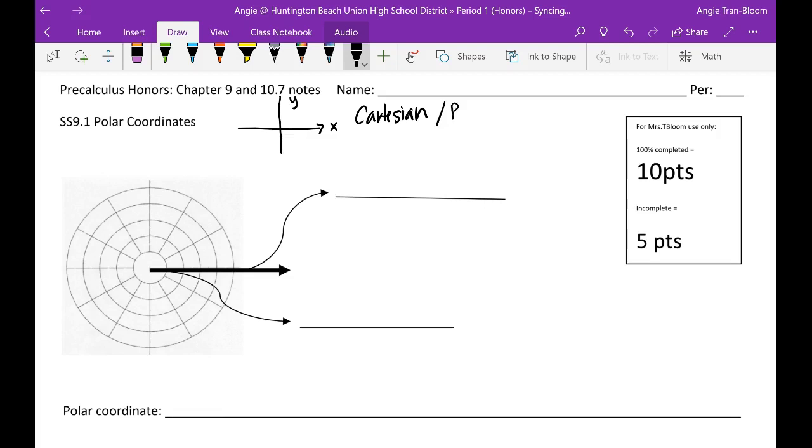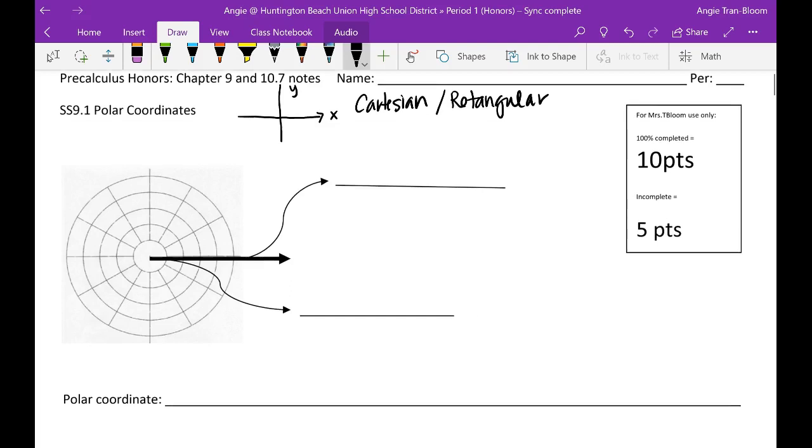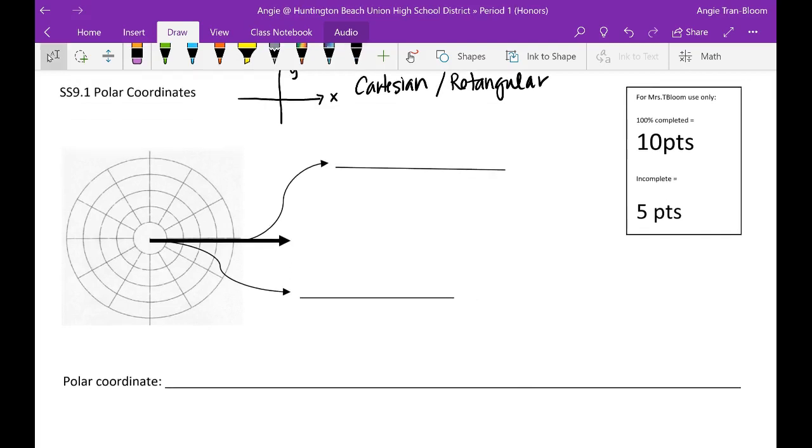In this book they also call it rectangular. Rectangular is when we have x and y, same thing as Cartesian. So today I am introducing you to, if you have not already been introduced in physics, a new set of coordinates called polar coordinates. In polar coordinates this line right here, that line we used to call x, now it's called the polar axis.